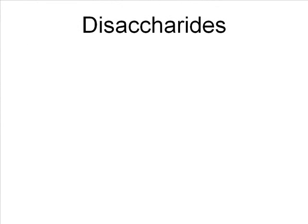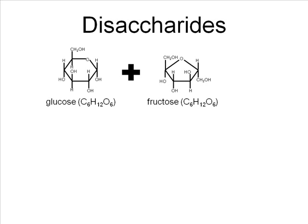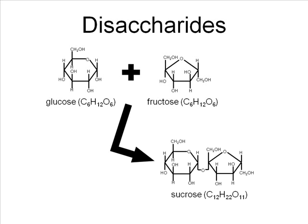Disaccharides, which you've probably heard of, are two monosaccharides covalently joined. So if we start with glucose and covalently bind a glucose to a fructose, we get sucrose — a disaccharide, table sugar — and in the process water is liberated, which is why this is called dehydration synthesis. We take a hydroxyl group from one and a hydrogen from the other to form water, then forge a covalent bond between the two monosaccharides. This is our glycosidic linkage — a covalent bond between two sugars.